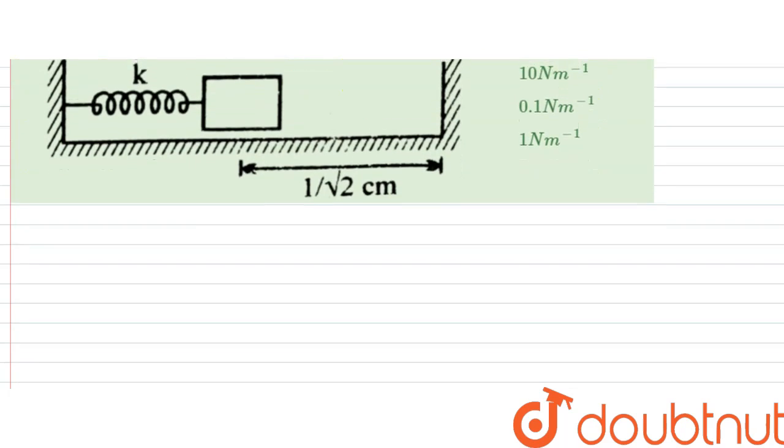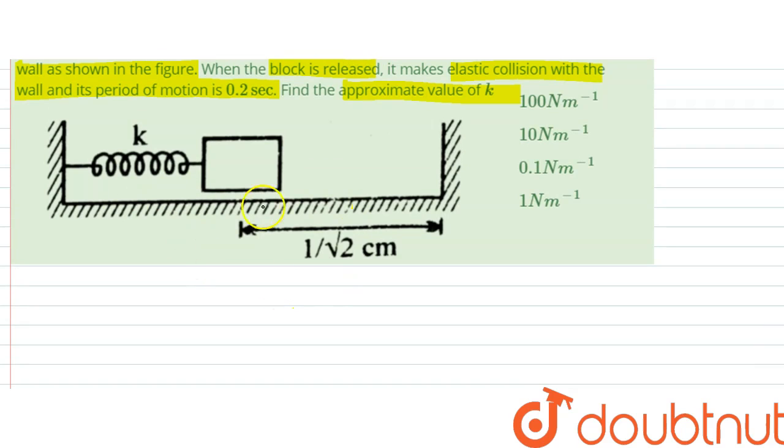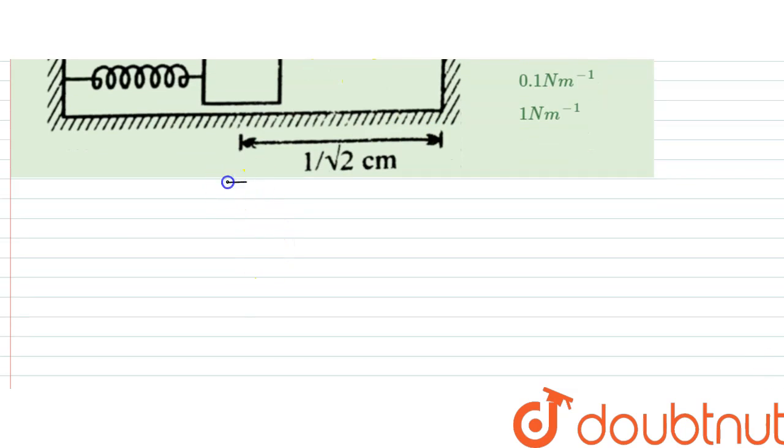So now, first of all, the given block will perform SHM since the surface is frictionless. It does not perform complete oscillation because of the wall. Here, time period is given as 0.2 seconds.